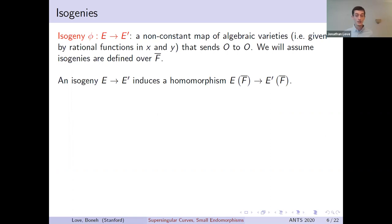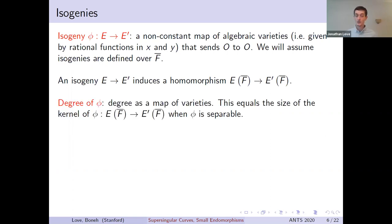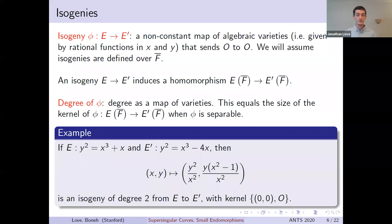A key quantity associated to any isogeny is its degree. If the isogeny is separable, the degree just corresponds to the number of points in E that map to a single point in E′. As an example of what an isogeny looks like, you can consider this map. If x and y satisfy the equation of E, then the outputs satisfy the equation of E′. This is an example of an isogeny of degree 2.